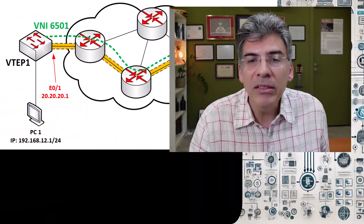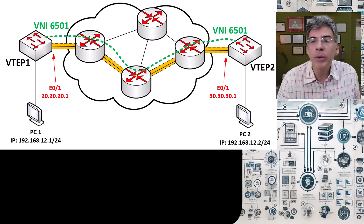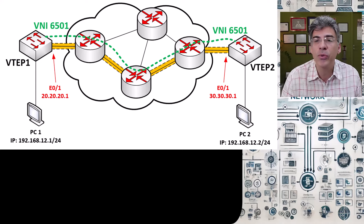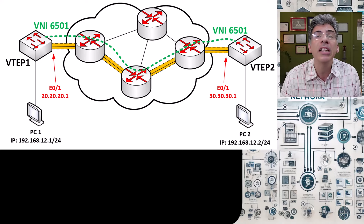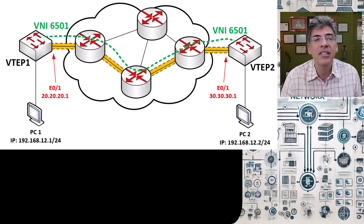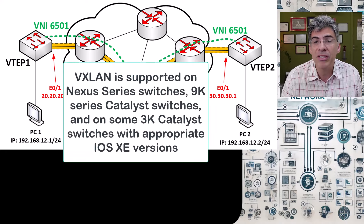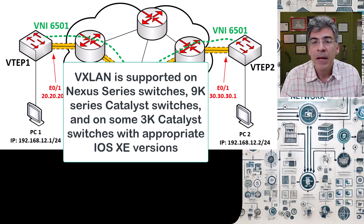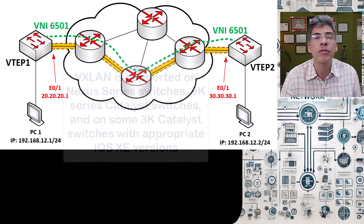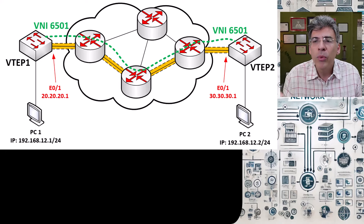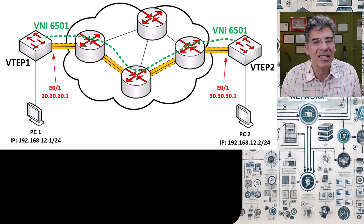So what are we going to do today? Well, we're going to create the following topology between two Cisco Nexus switches. We're choosing to do this on Nexus switches because these are the most commonly used Cisco switches for data centers. VXLAN is supported on other Cisco devices such as some 9000 series Catalyst switches as well as some 3000 series devices using the appropriate IOS XE versions, but Nexus switches are the predominant models used for data centers. The logic behind the configuration is similar for other models as well with just some small differences in the syntax.